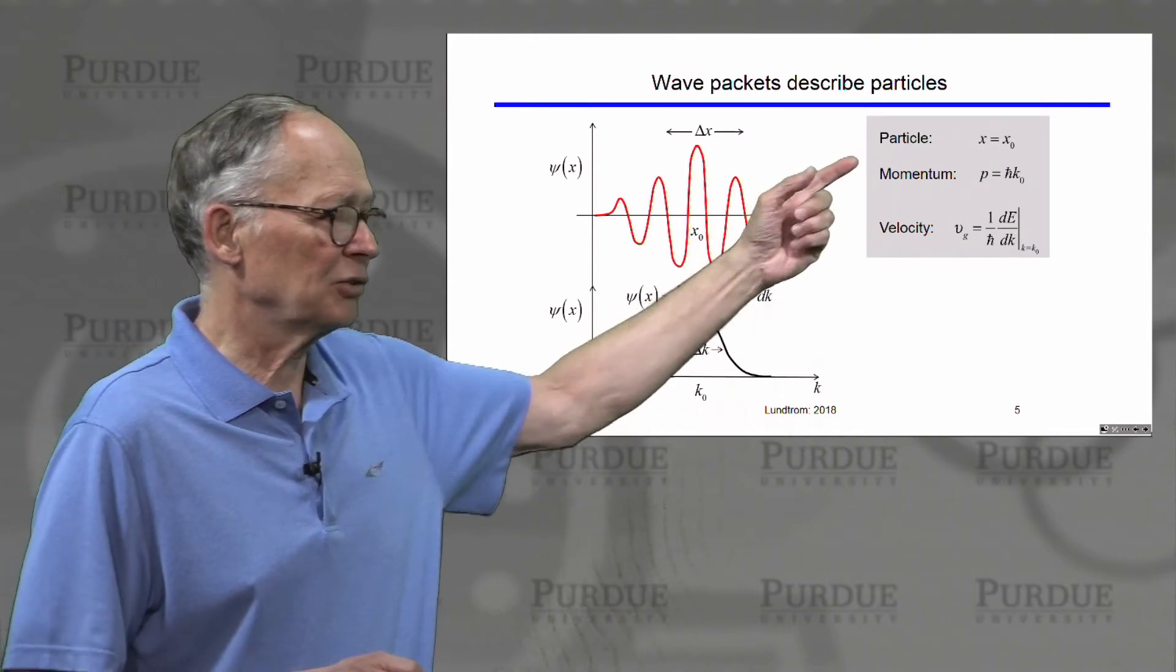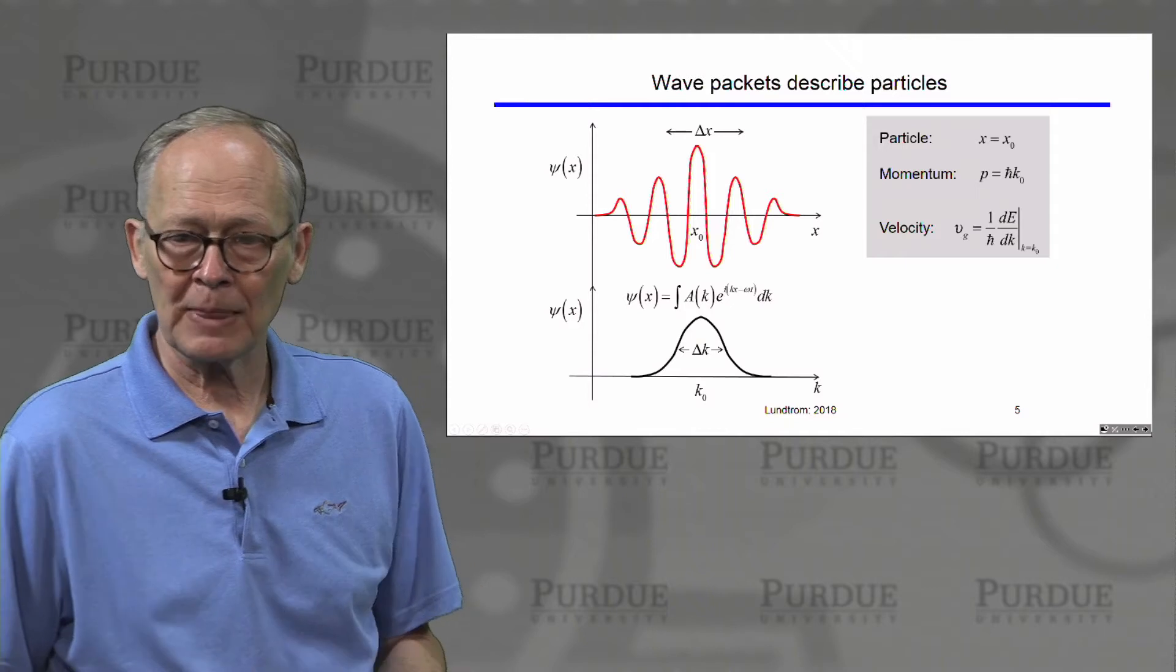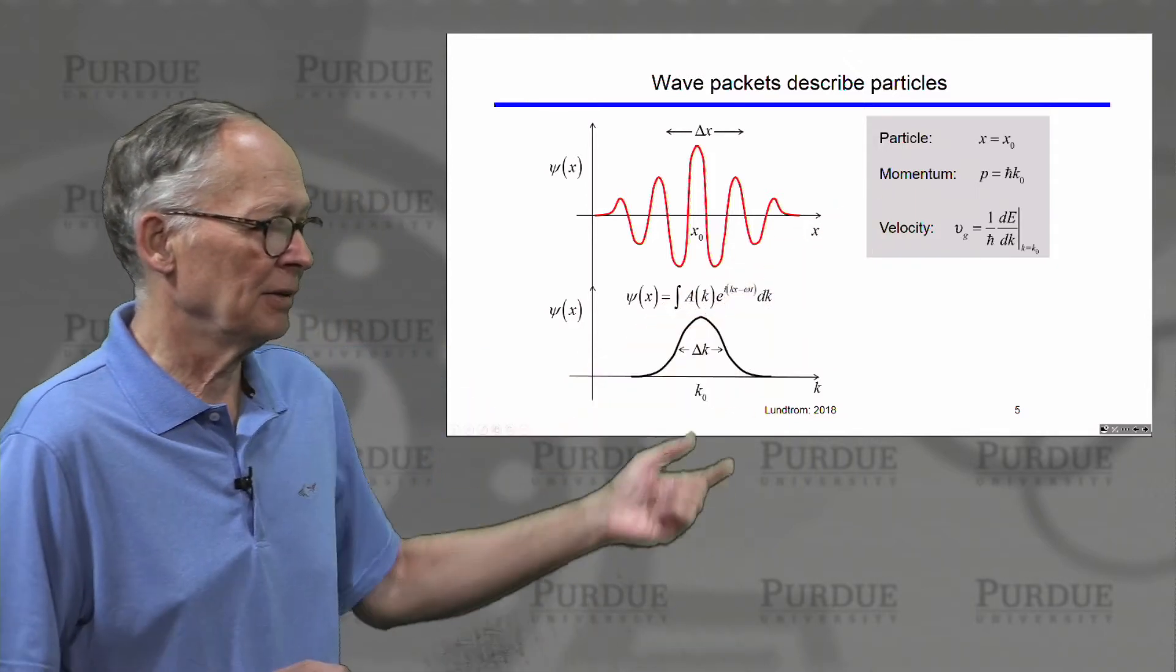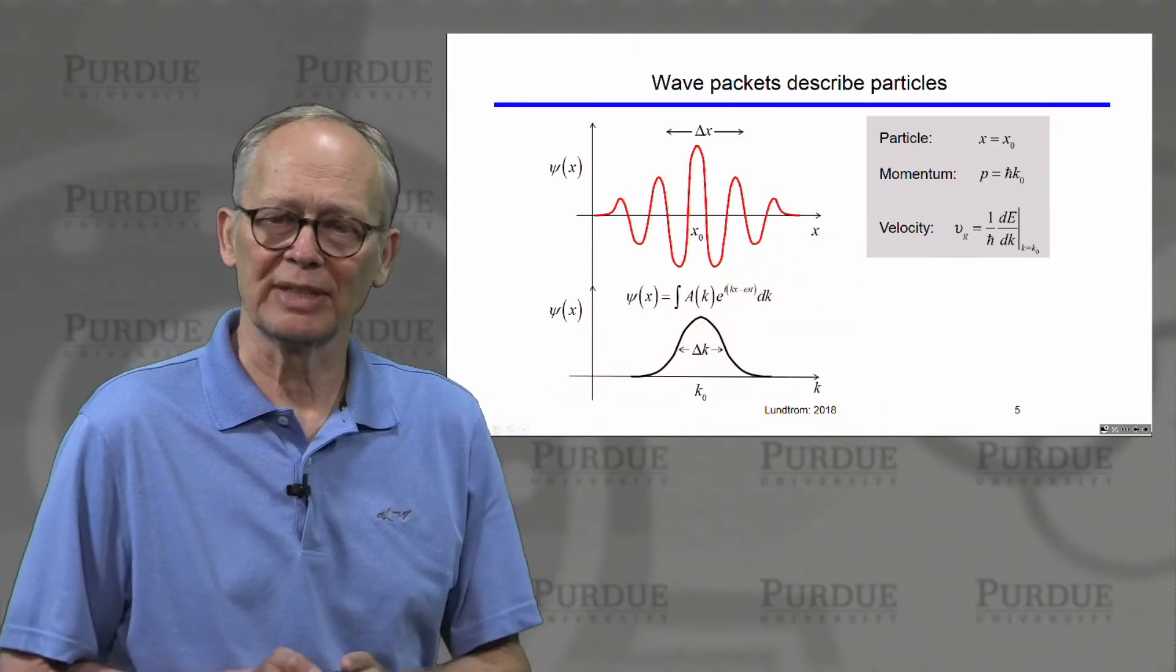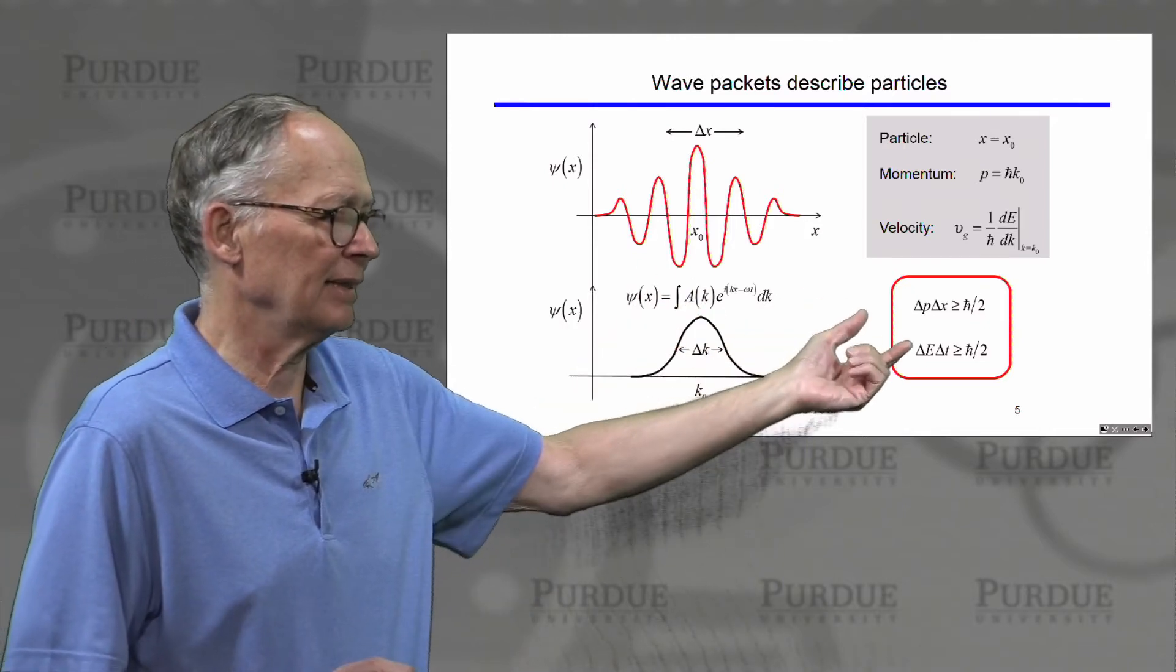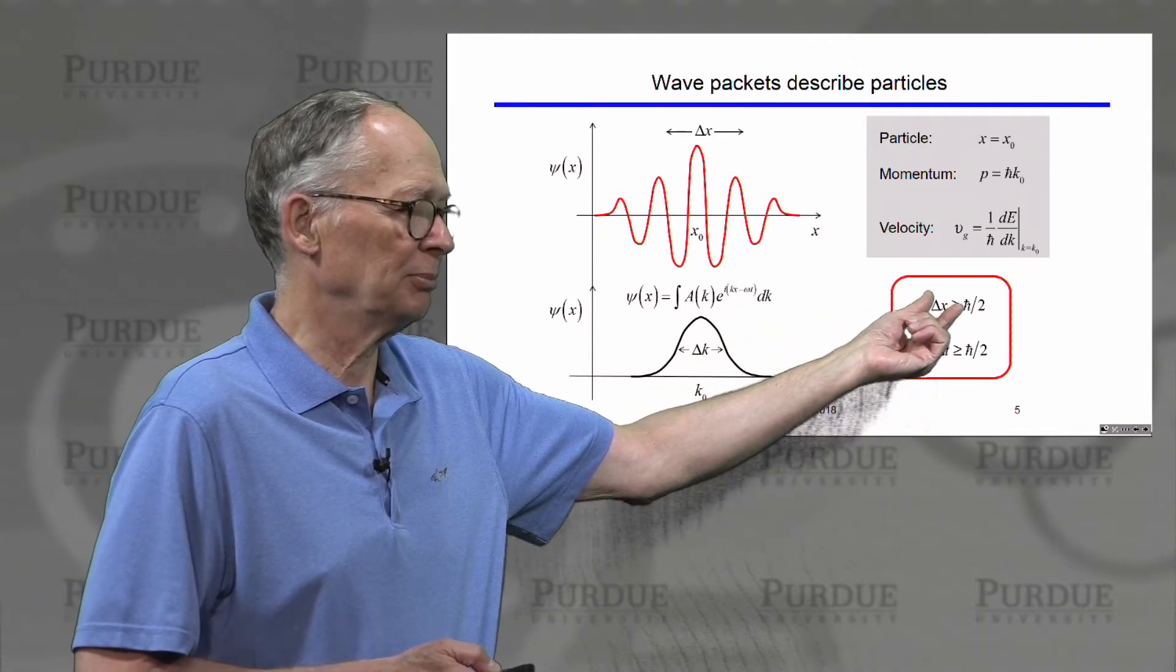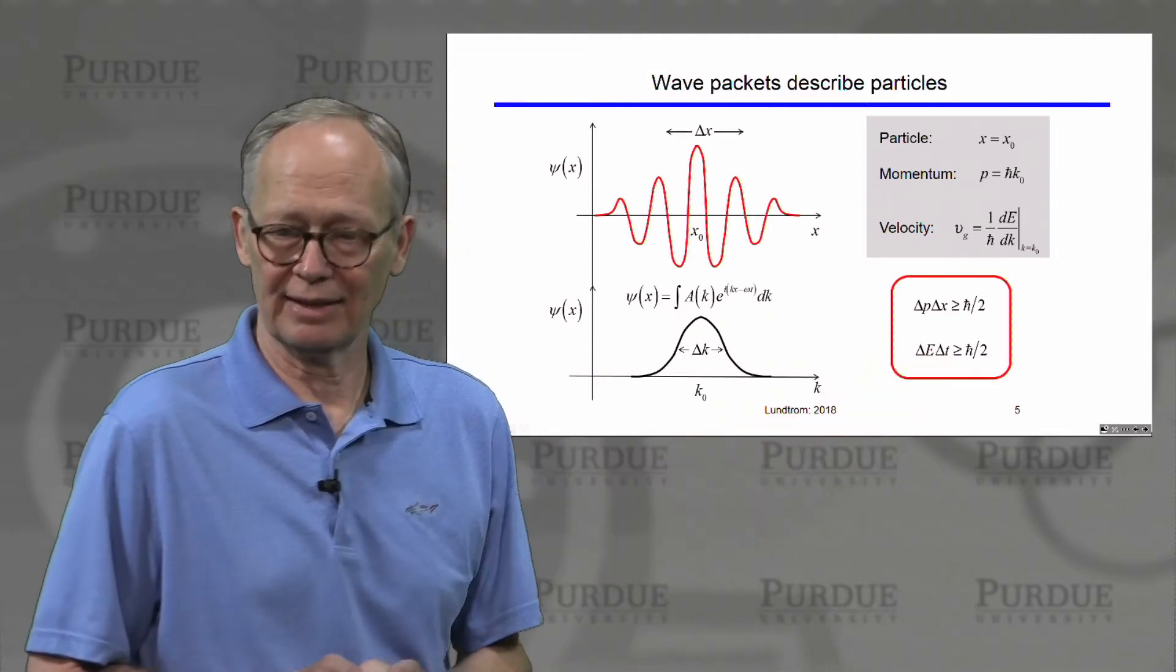This wave packet then describes a particle located at x equals x naught with a crystal momentum, k is equal to k naught. And the velocity of this wave packet, or the velocity of the electron, moves at the group velocity of this wave. So this process of making the wave packet leads to uncertainty relations. There's an uncertainty between momentum and position. There's an uncertainty also between energy and time.